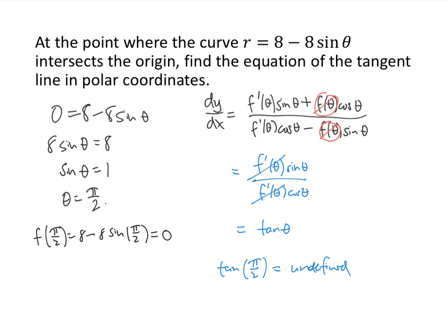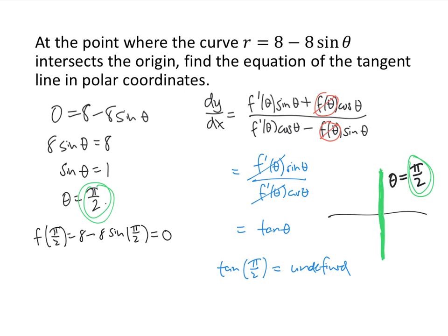An undefined slope means the tangent line is vertical. Since it passes through the origin, in polar coordinates vertical lines through the origin have equations of the form theta equals some value. In this case, the equation is theta equals π/2 — which is no surprise, since that's the theta value we found at the origin. An equally valid answer would be theta equals 3π/2. To wrap up: rather than memorizing the full formula, remember it comes from the product rule and the identities y equals r sine theta, x equals r cosine theta.